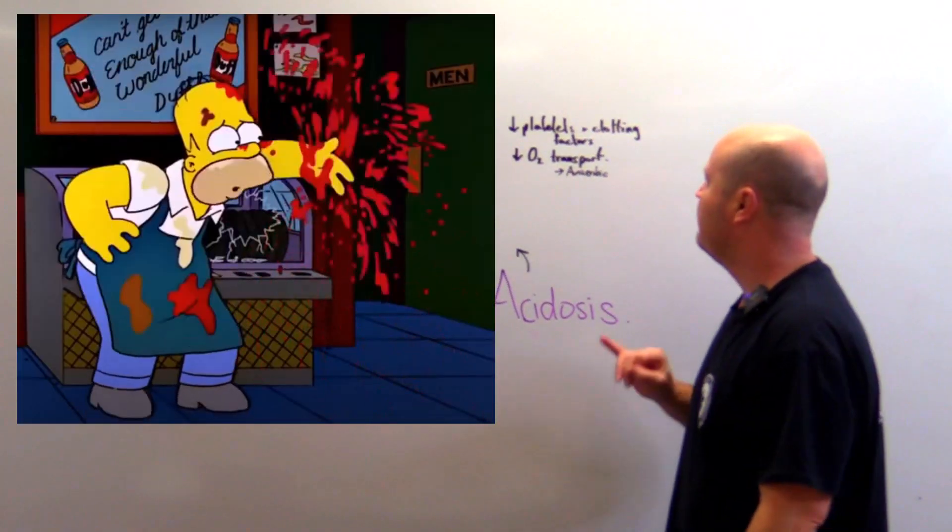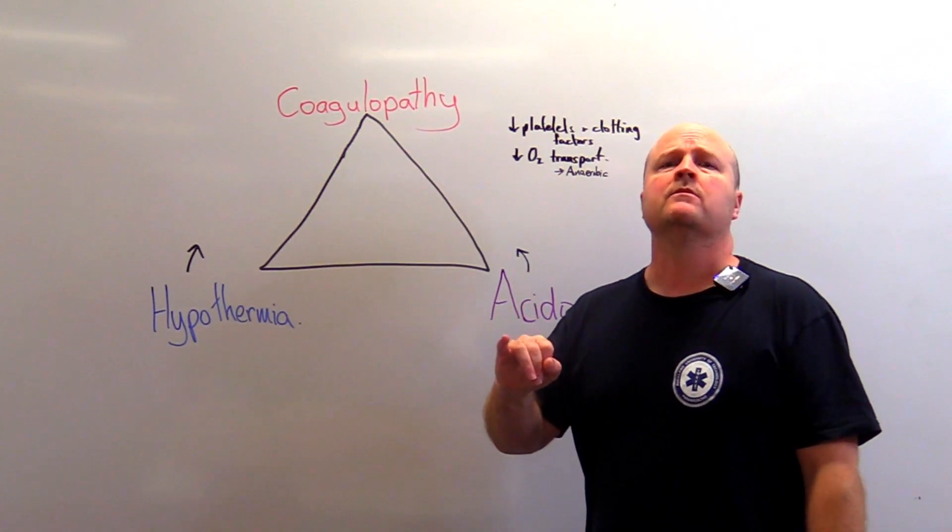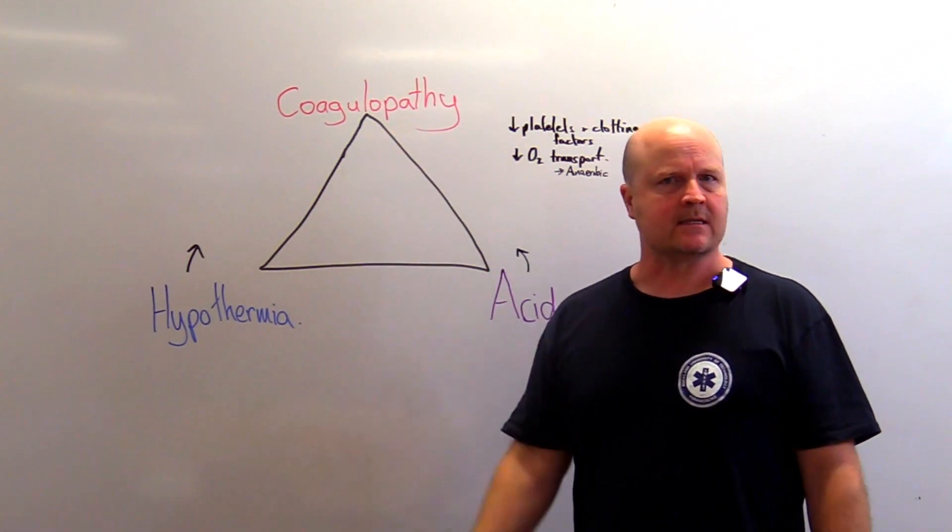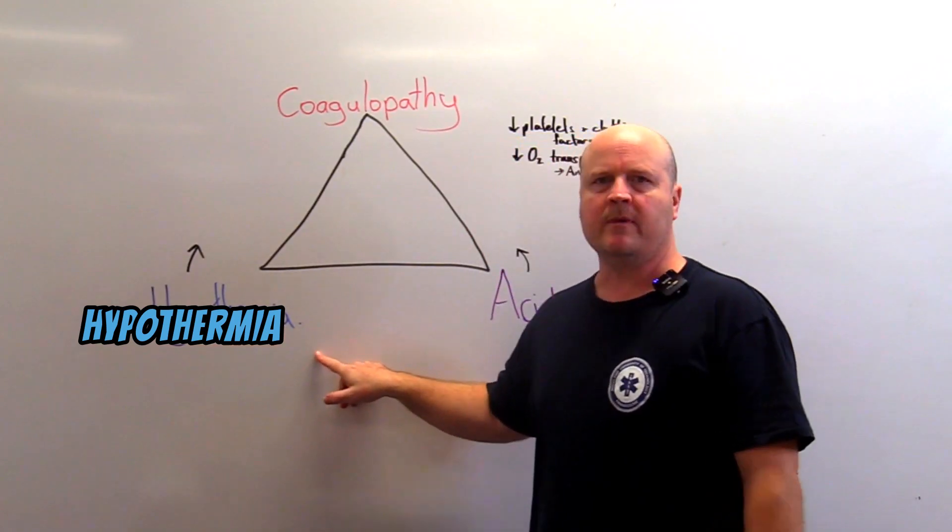If we have bleeding then blood is warm. If we're losing blood we're gonna start getting cold. We're gonna end up with hypothermia.